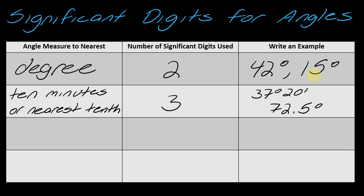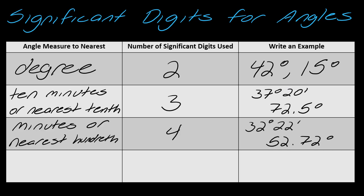10 minutes or a degree to the nearest tenth is going to be considered three significant digits. Here's where this can get kind of funky. I've got 37 degrees and 20 minutes. This last zero is not counted in our significant digits, so it would be one, two, three significant digits. Or 72.5 degrees. Notice that this is a 10 - minutes in terms of 10. When you have a multiple of 10, that's three significant digits.